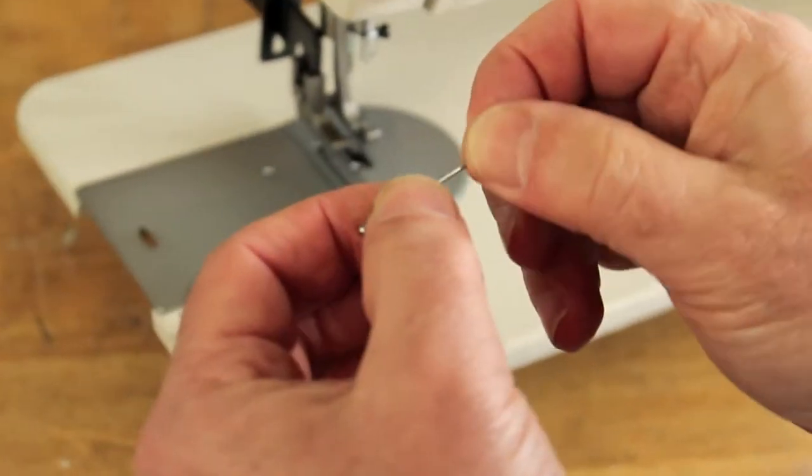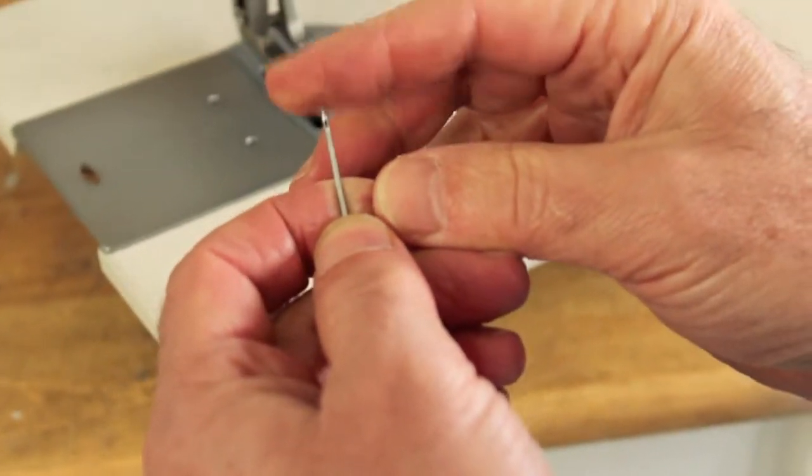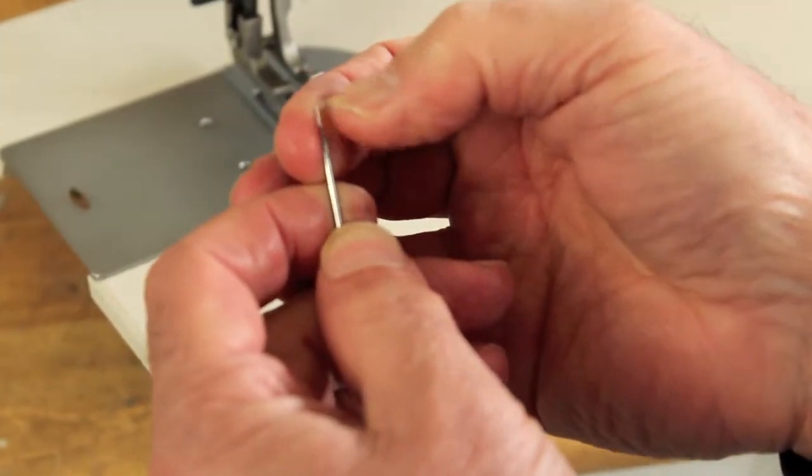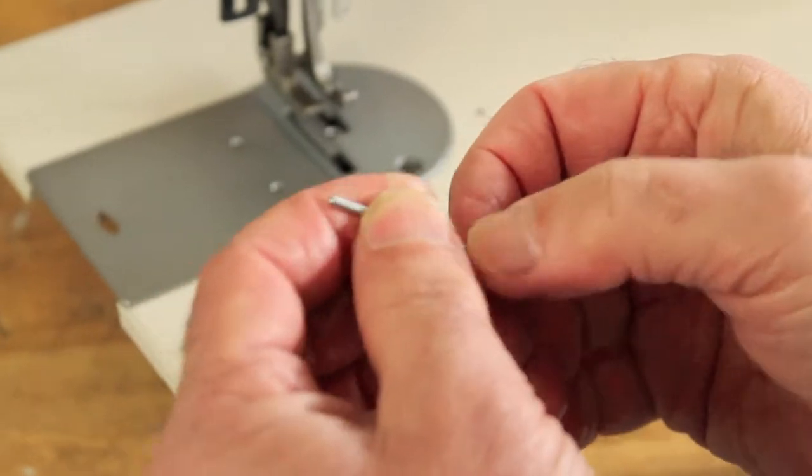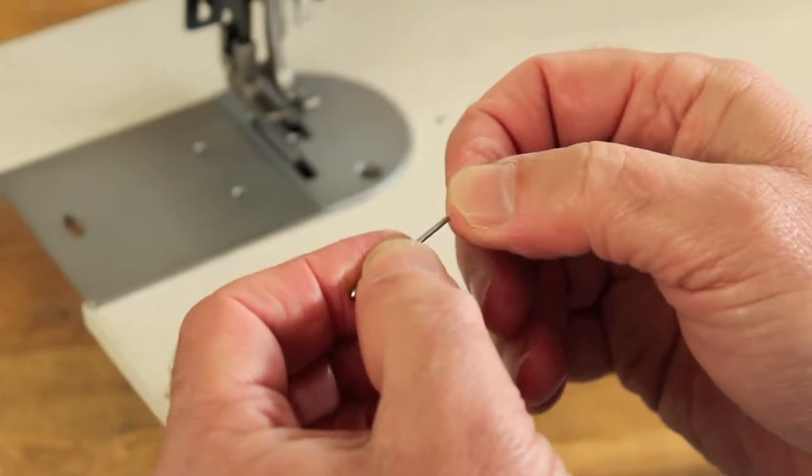Now the reason you would change a needle, first of all, would be if the needle is dull or blunt. If it doesn't poke you, it's usually dull. You can feel if it's not sharp or that type of thing because a dull needle will cause skipping stitches on any sewing machine. So make sure you always use a nice new fresh needle.